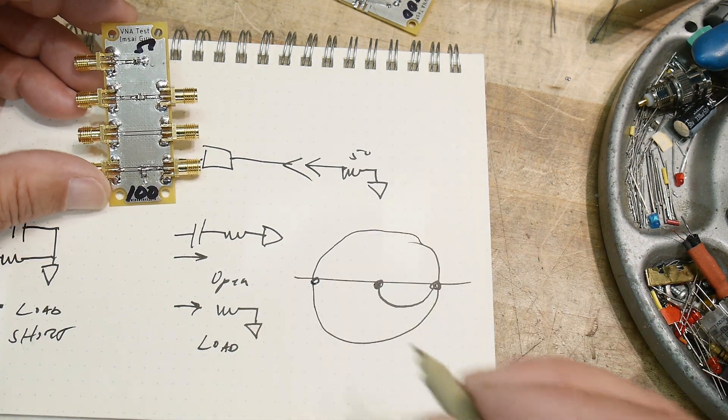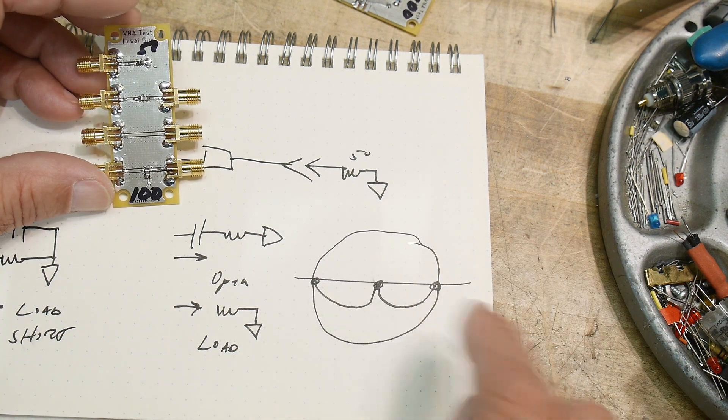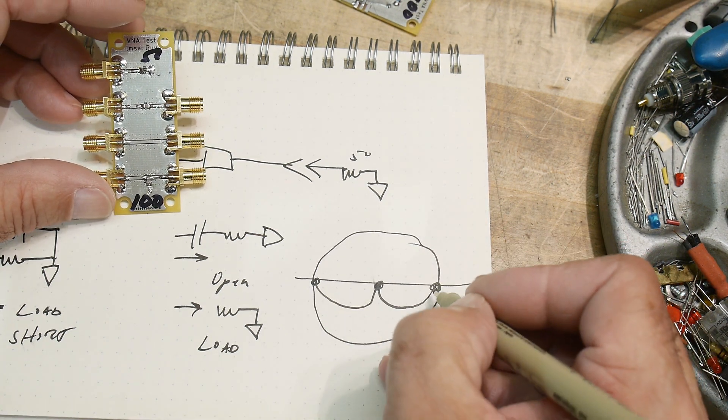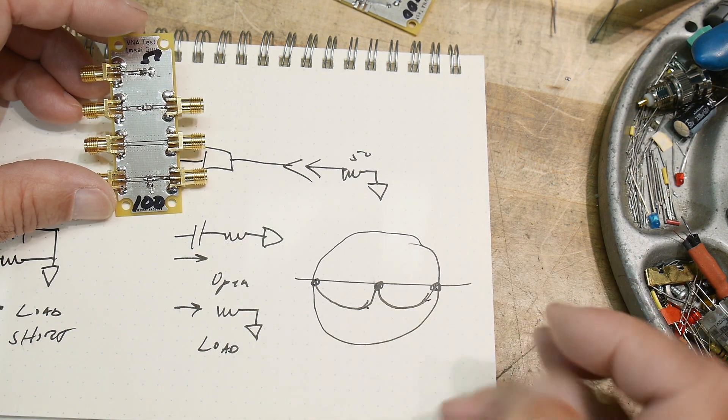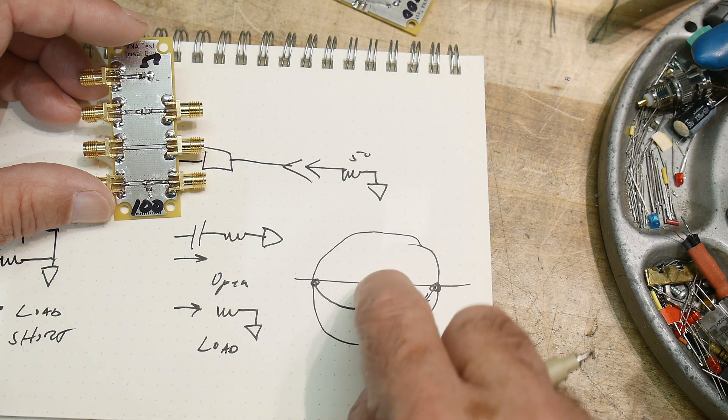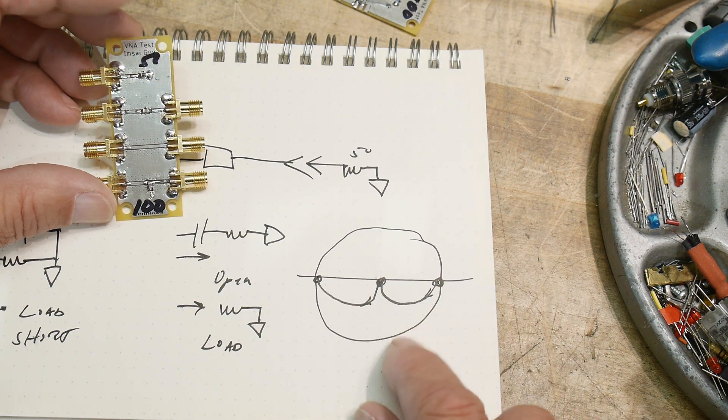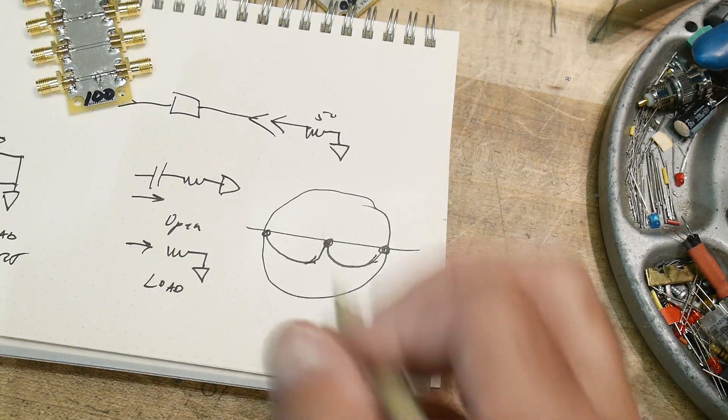We're going to go between a load and a short. On a Smith diagram, here's the load and here's the short, and the path that we take is this one. This one goes in this direction and this one also goes in this direction, from DC to AC.